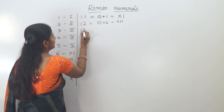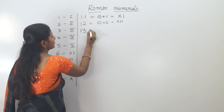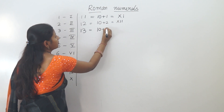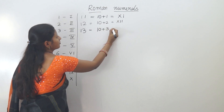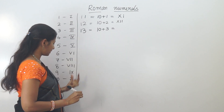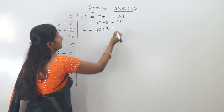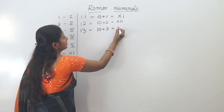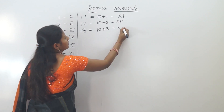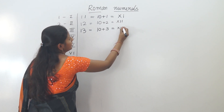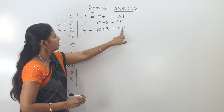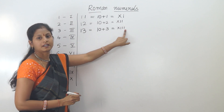Next, 13. Thirteen is 10 plus 3. Ten is written as X, and 3 is written as I, I, I. So 13 in Roman numerals is X, I, I, I — XIII.